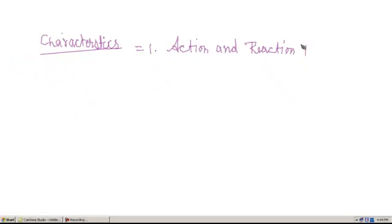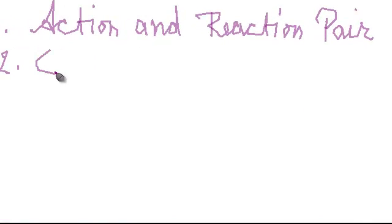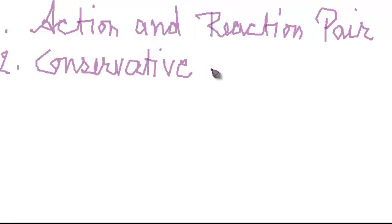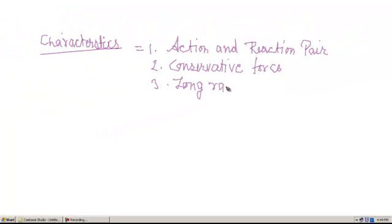Second, it is a conservative force. That means gravitational force is effective even if their distance of separation is very large. For example, the gravitational force between the Sun and the Earth is of the order of 10 to the power 22 Newton, although the distance between them is 1.5 into 10 to the power 8 km.